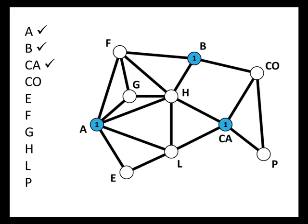Now we're up to CO. CO is connected to a couple of 1s, so it can't be color number one, but it can be color number two. Next up is E. E is connected to A, which is colored with number one, so E can't be number one, but it can be number two. F is connected to a couple of 1s, so it can't be one, but it can be two. Next up is G. G is connected to A so it can't be number one, and G is connected to F so it can't be number two, but it can be number three. Next we have H. H is connected to some 1s, a 2 at F, and a 3 at G, so H can't be 1, 2, or 3 — H is going to have to be color number four.